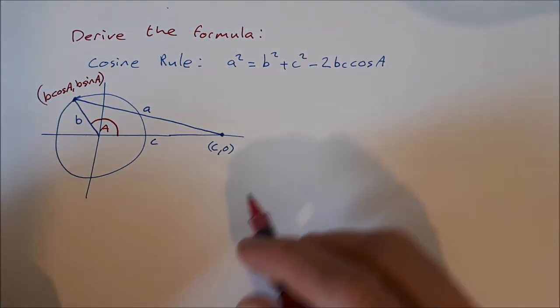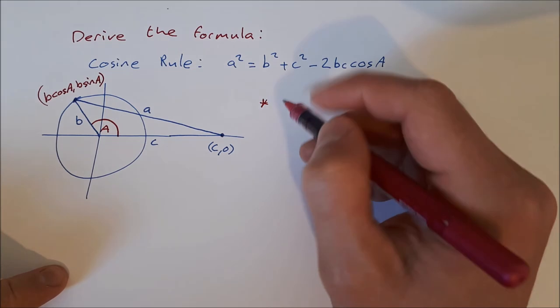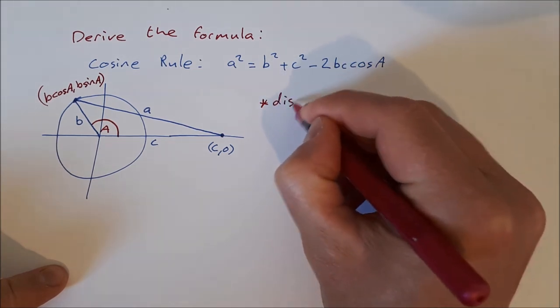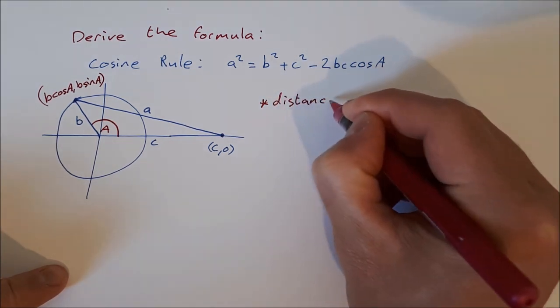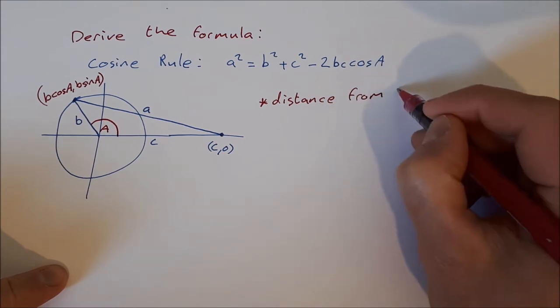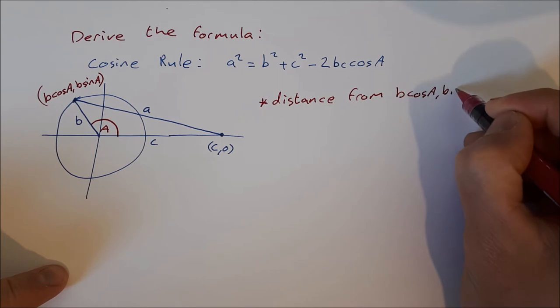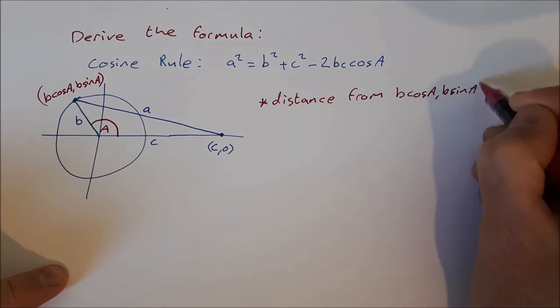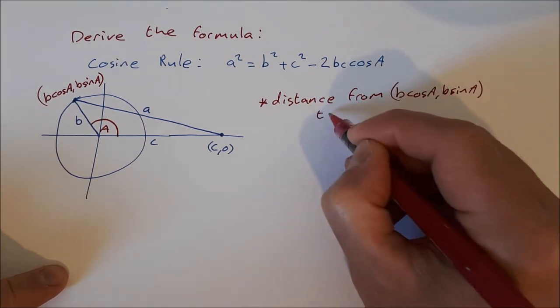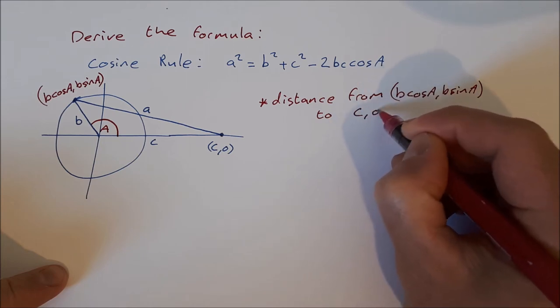So now we're going to find distance from b cos A, b sin A, to c, 0.